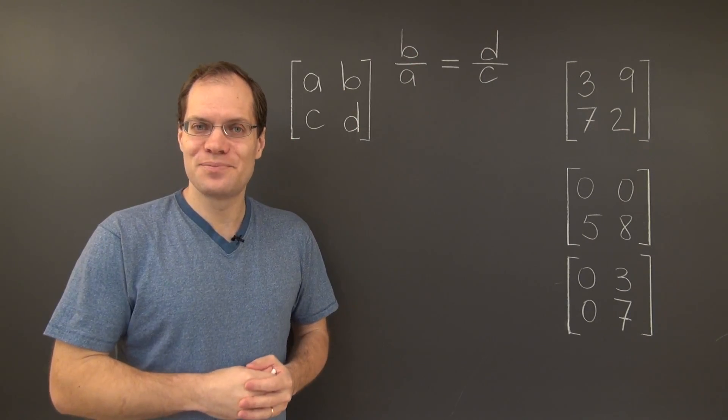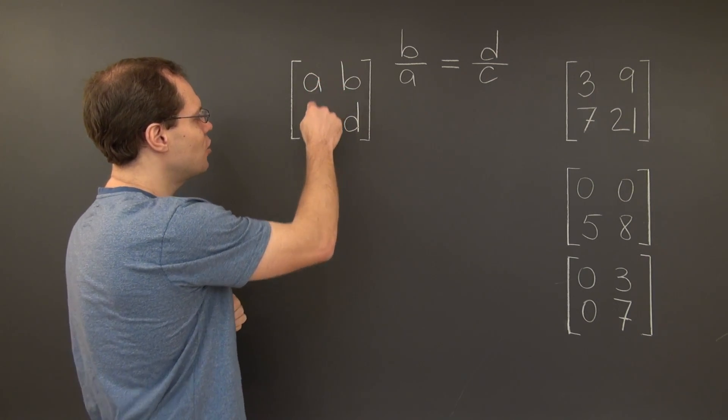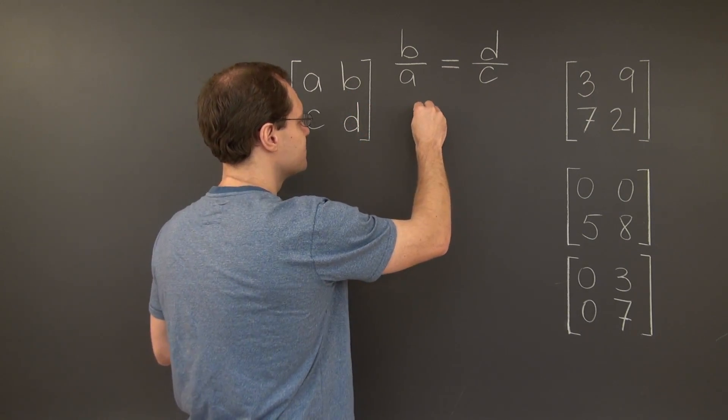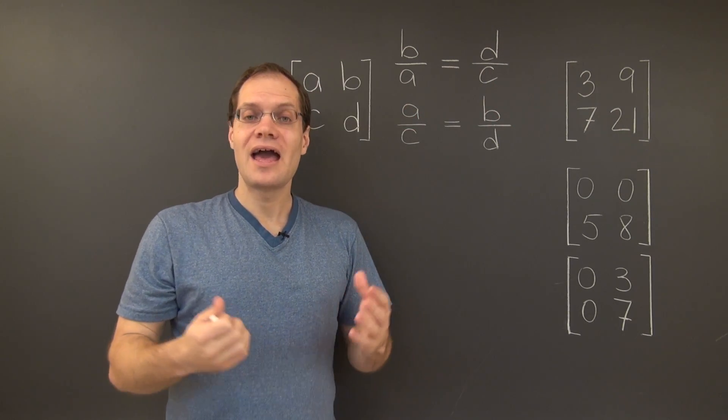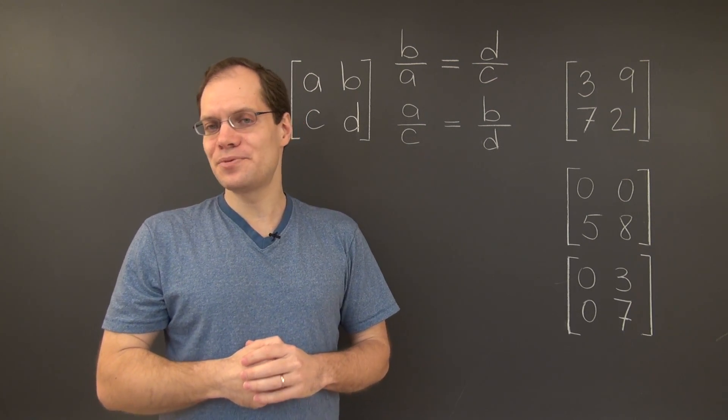According to the second approach, we'll say that the columns of this matrix are linearly dependent if A over C equals B over D. And so now we have not one, but two pretty good algebraic criteria.